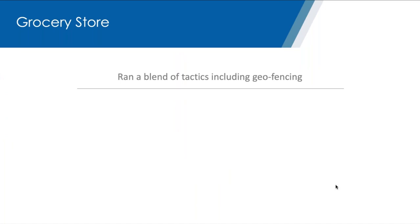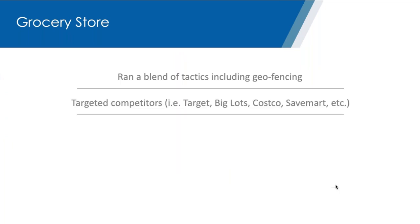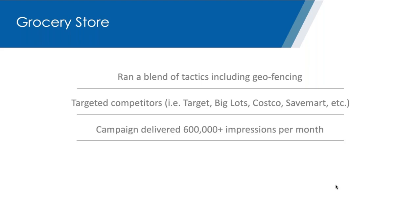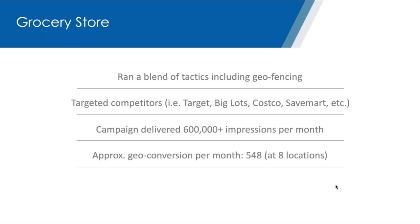The next example is a grocery store that ran a blend of tactics: site, search, keyword, and geofencing. They targeted their competitors — Big Lots, Costco, Save-a-Lot. They delivered 600,000 ads over the course of a month, driving 548 conversions into their eight locations for a cost of under $10 per visitor. I've never gone to the grocery store and spent less than $10, so these numbers are a great indicator of the positive ROI on this campaign.